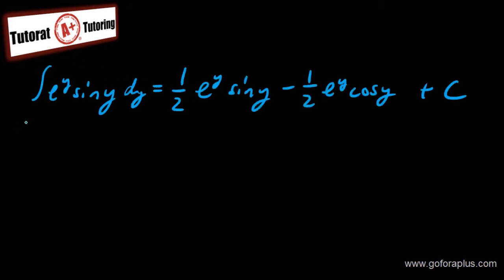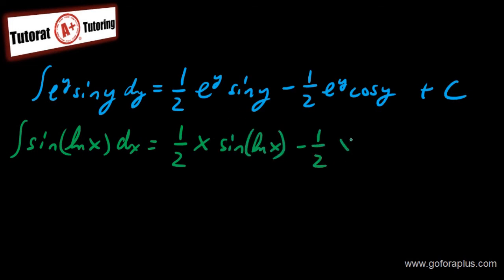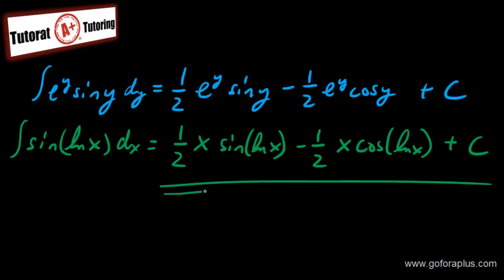So I know that integral of sine ln of x dx, this is the original integral, is equal to one half. Now put back y as ln of x. So e to the ln of x is just x. x times sine of ln of x minus one half of x times cosine of ln of x plus c. And this is basically my final answer.